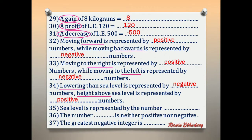Number 35: sea level is represented by the number zero. Number 36: the number that is neither positive nor negative is zero.